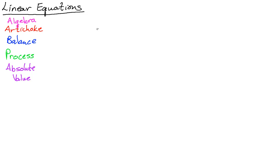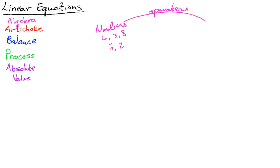First is the word algebra. When you take numbers such as 6, 3, 8, 7, 2 and do operations on those, this is what we call arithmetic. We get answers, such as 6 plus 3 times 2, and you have order of operations — you put numbers together and you can add, subtract, multiply, and divide.